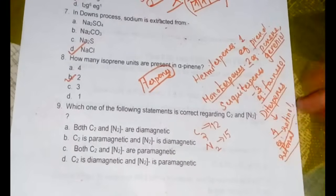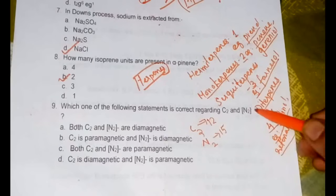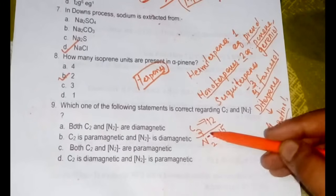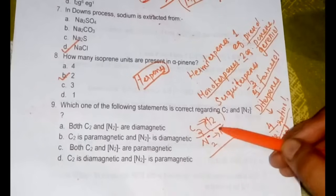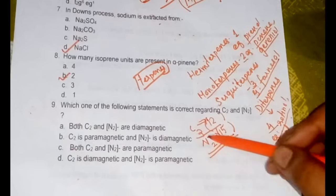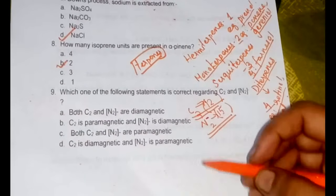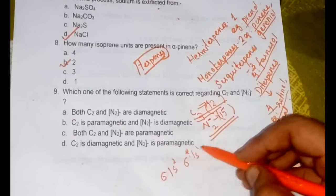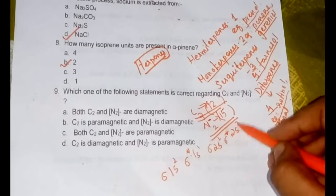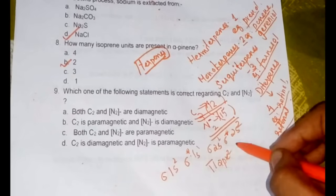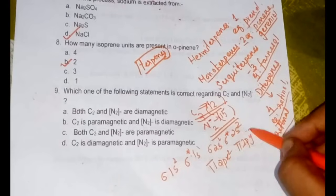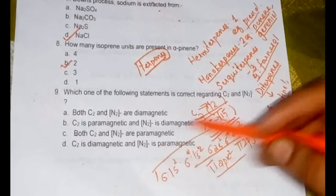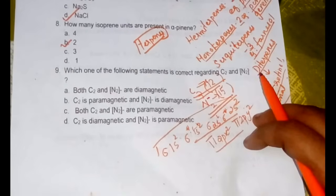The next question is which of the following statement is correct regarding C2 and N2-. C2 is having total of 12 electrons and N2- is having a total of 15 electrons. Even simply by looking at these numbers you can suggest that N2- will be paramagnetic and C2 will be diamagnetic. But if you don't want to take risk we will be writing down the configuration. For C2 it will be sigma 1s2, sigma star 1s2, sigma 2s2, sigma star 2s2, next comes pi 2px2 and pi 2py2. So this is 2, 4, 6, 8, 10, and 12. We can see all the electrons are paired so definitely C2 is diamagnetic.